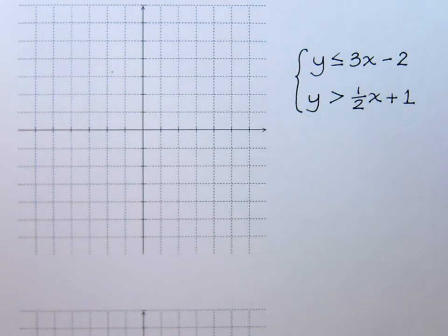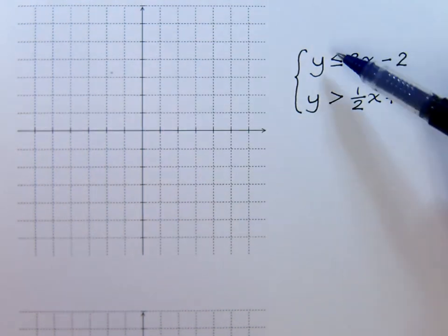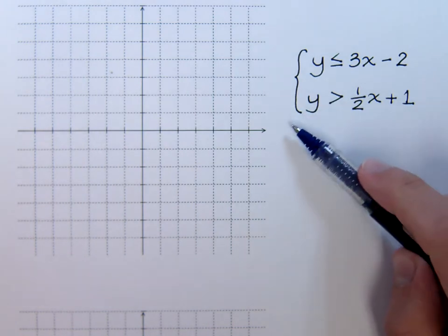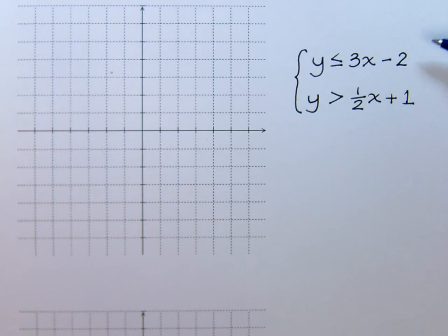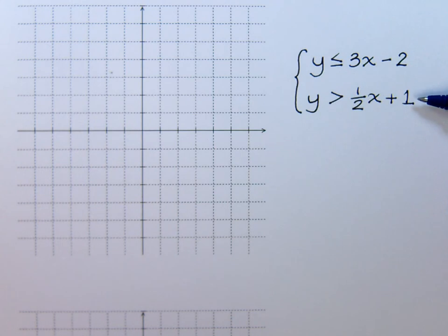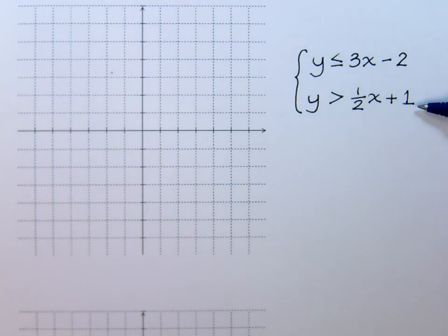In this video we examine solving a system of inequalities. We have set notation for a system with two different linear inequalities. In previous videos we saw how to graph these individually, but now we want to graph them together to find their solution — basically, to find out where their shadings intersect.